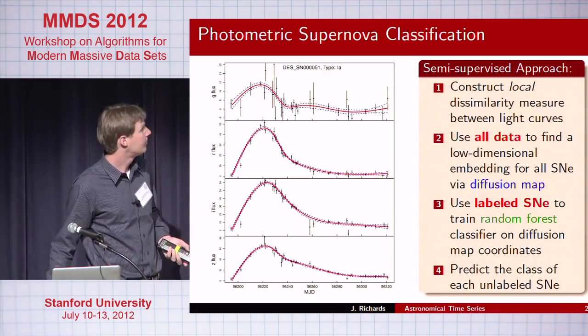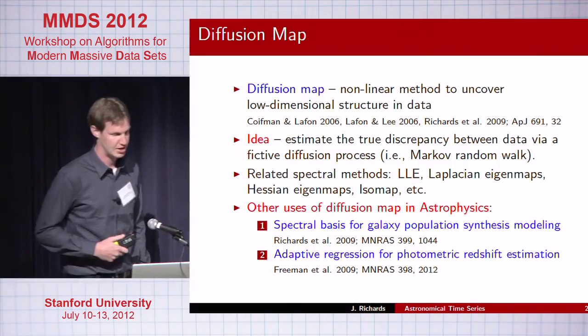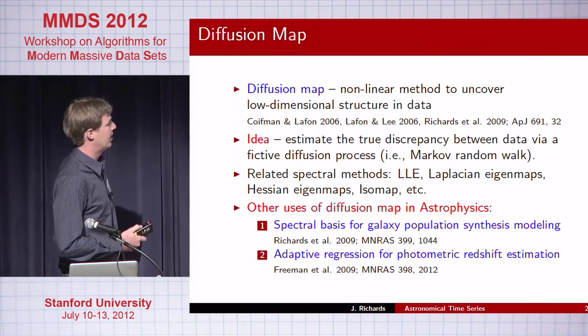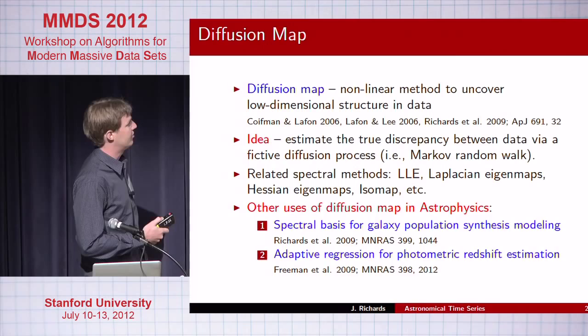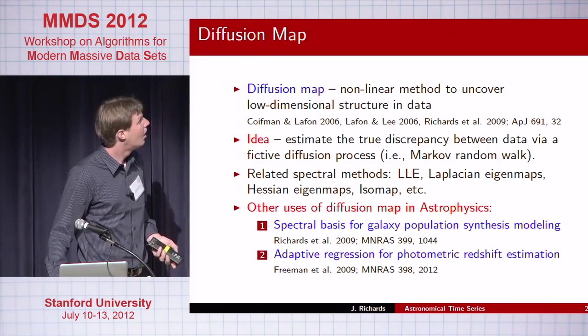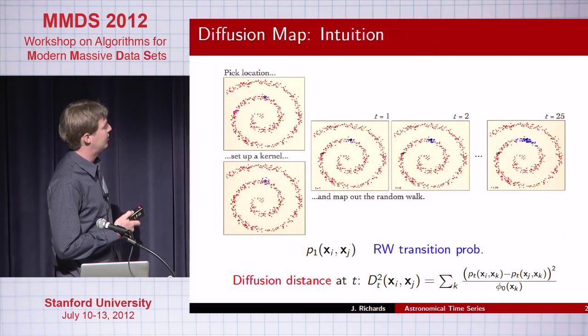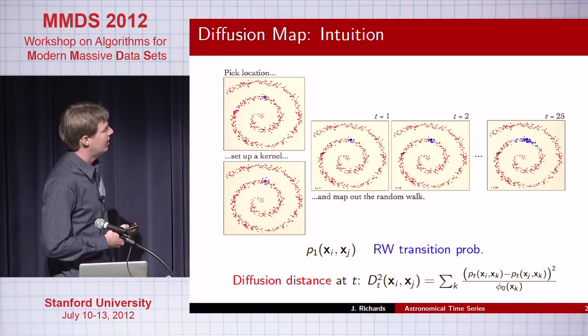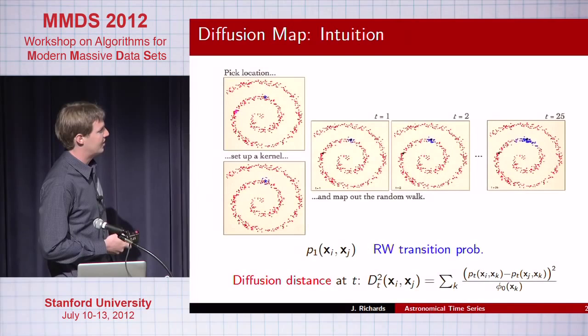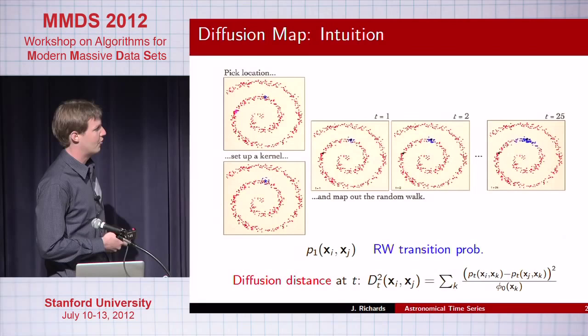For those unfamiliar with diffusion maps: it's a nonlinear dimensionality reduction technique, pretty related to Laplacian eigenmaps and local linear embedding. Coifman and Lafon wrote papers in 2006 on the method. The general idea is to assume data in some space, set up a local kernel around each data point, and run a fictive diffusion process where you're only allowed to jump to nearby data points. The distance between conditional probability vectors is a robust description of the true distance in your dataset with respect to the geometry of the data.